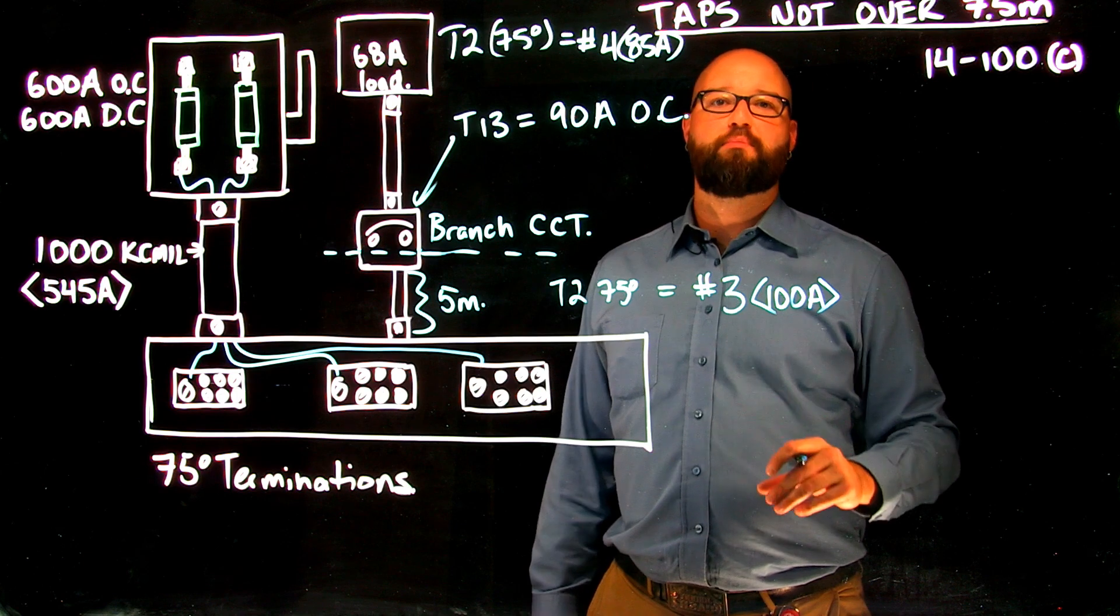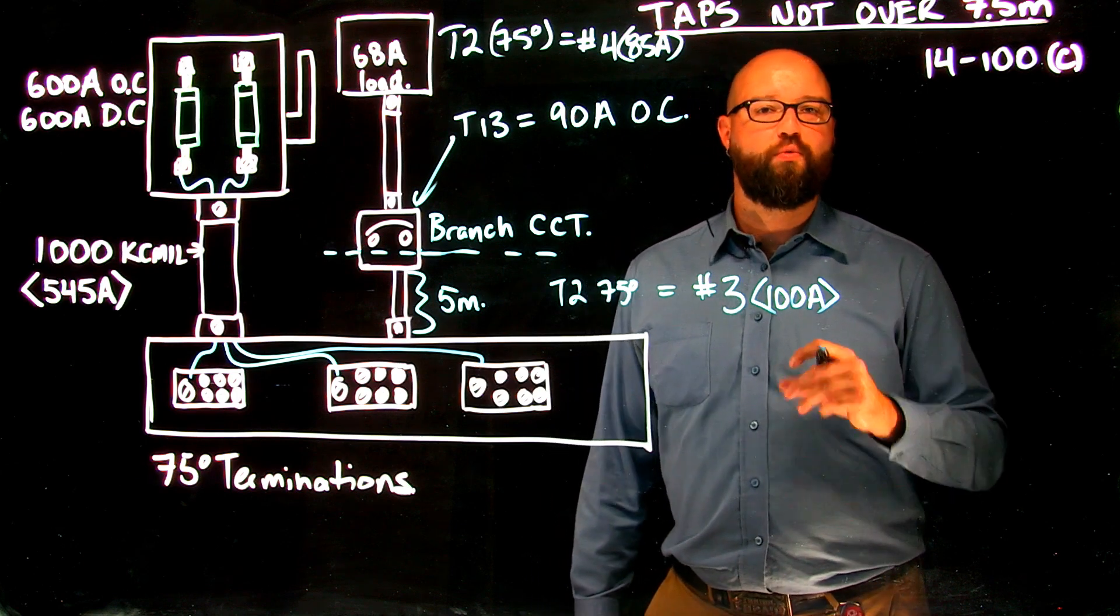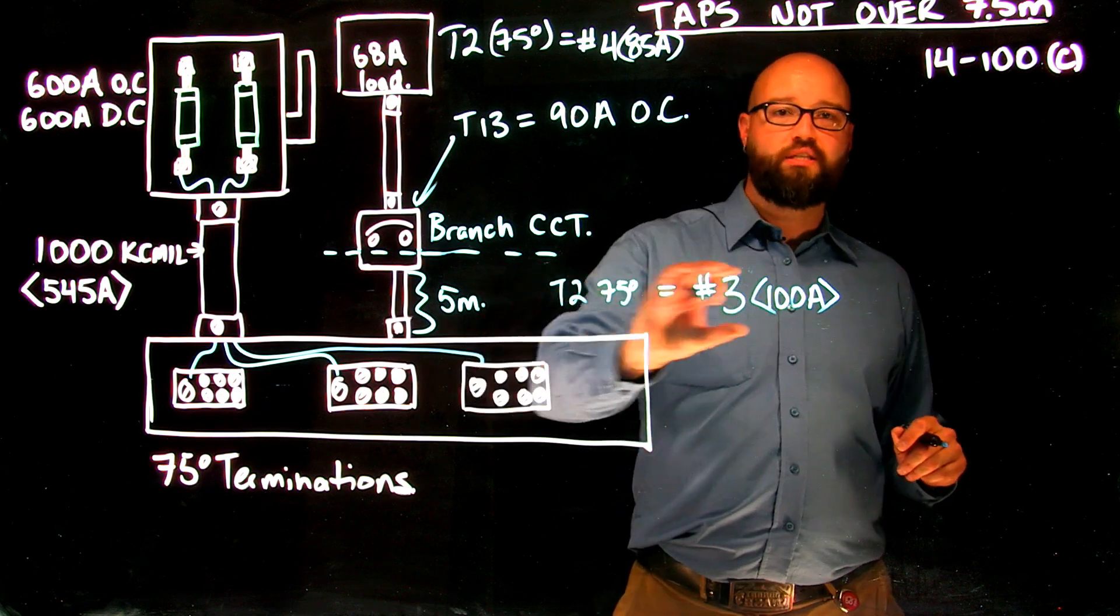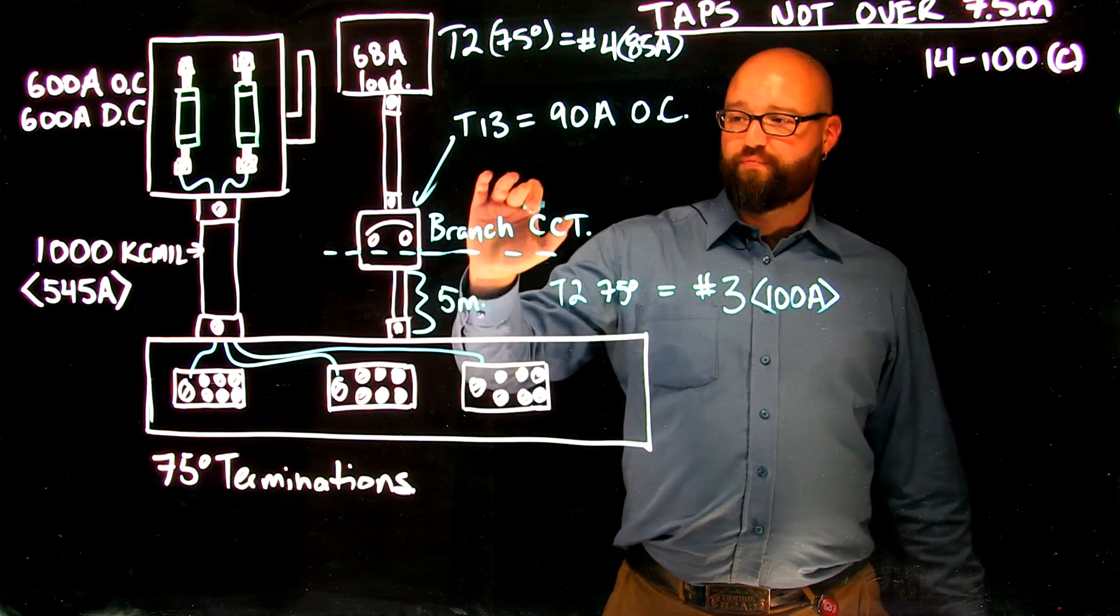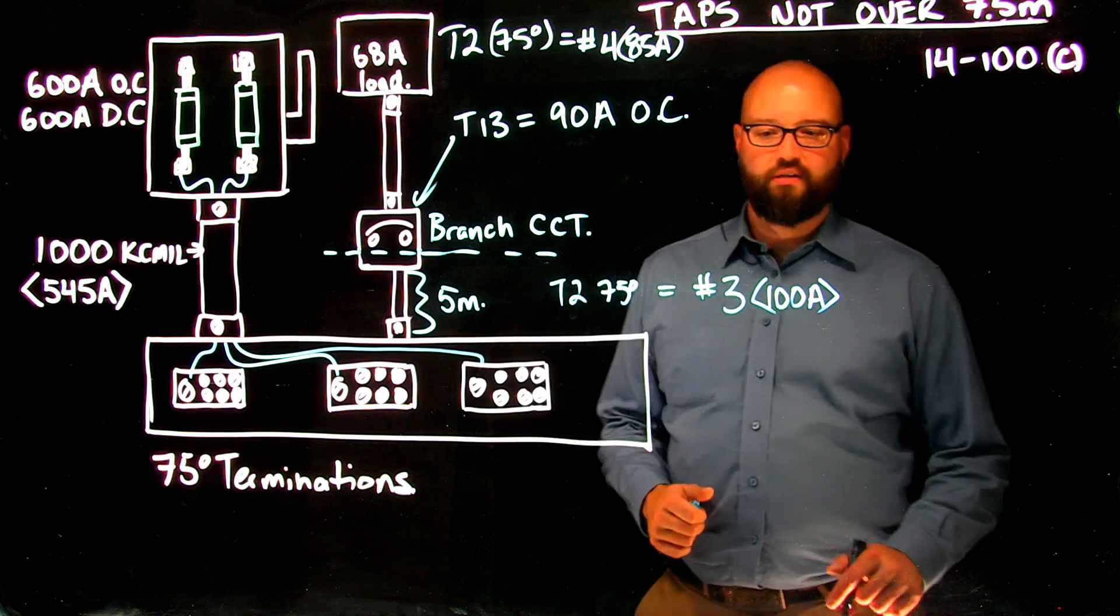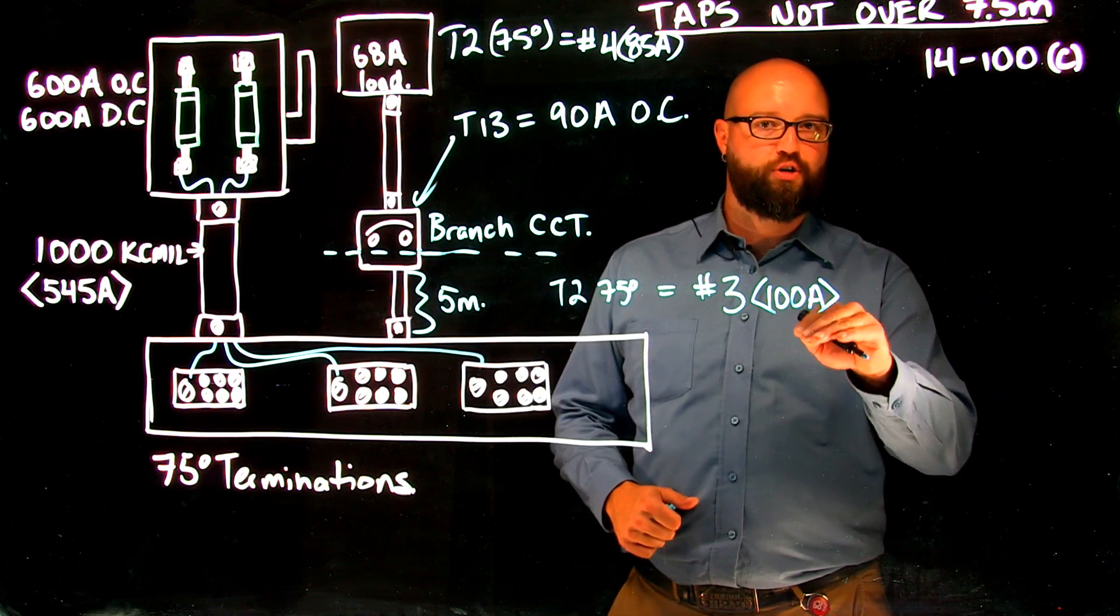Now this is not a choice that you get to make. It is the larger of the two wins in this situation. So what we need to do first is figure out what is the tap conductor based off the overcurrent that it supplies. It needs to be larger than that. That's our first. So we end up with the number 3 as the first portion of our choice.